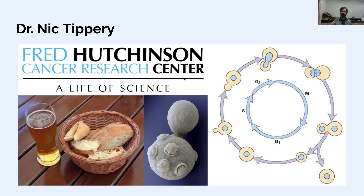One of the reasons that cancer happens is that cells fail to stop in the cell cycle if they have a mistake in their DNA repair. Along the way there are checkpoints where the cells can say, wait, I made a mistake, I better fix that before moving forward. If those checkpoints are broken, that's one of the reasons people can have cancer developing. We can identify the genes responsible for those checkpoints in yeast and find out how they're behaving in humans who have cancer or in healthy humans.